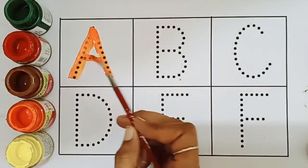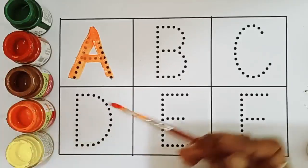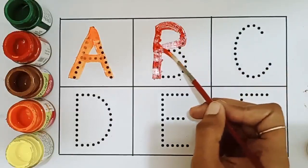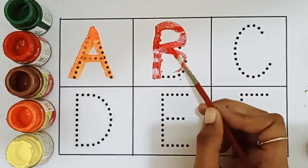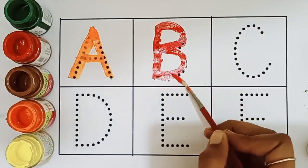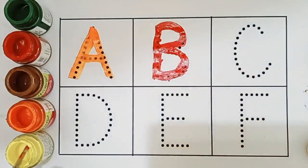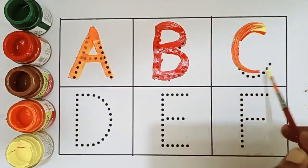A, A for apple. Red color. B, B for bowl. C, C for cat.